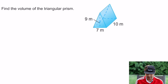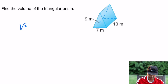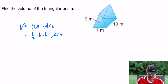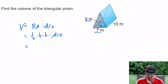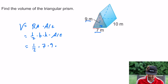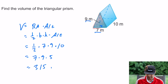Another triangular prism example: volume equals base area times altitude, so one half base times height times the altitude. Base and height are perpendicular. One half times seven times nine times the altitude of ten gives you 315 cubic meters.